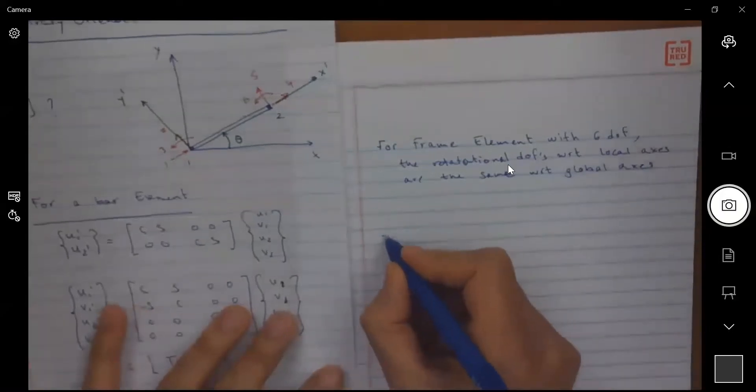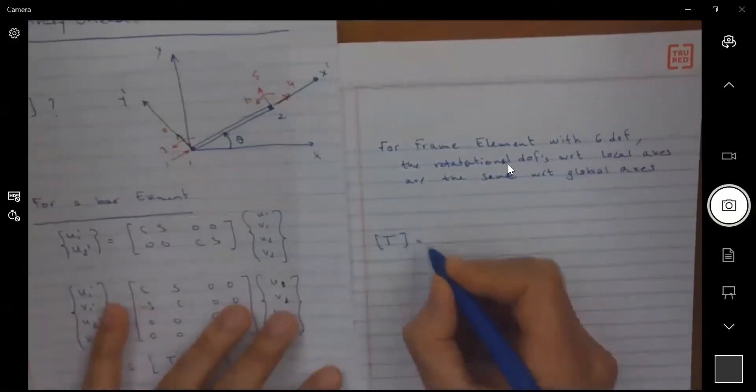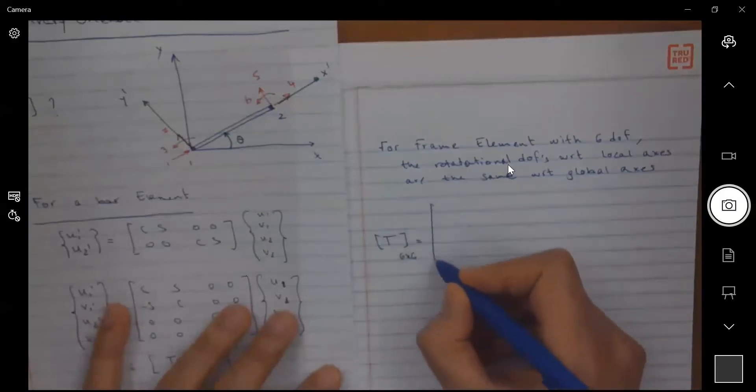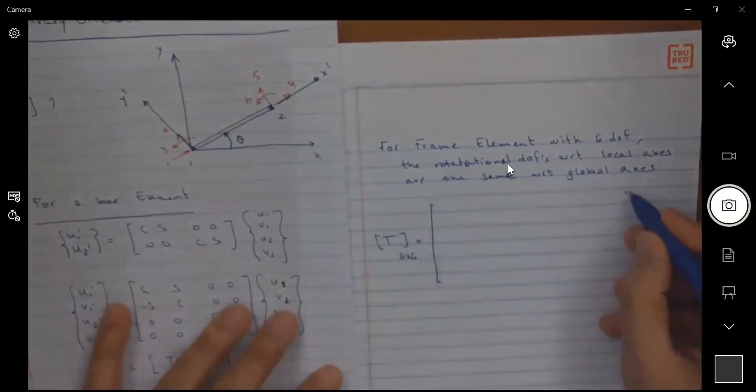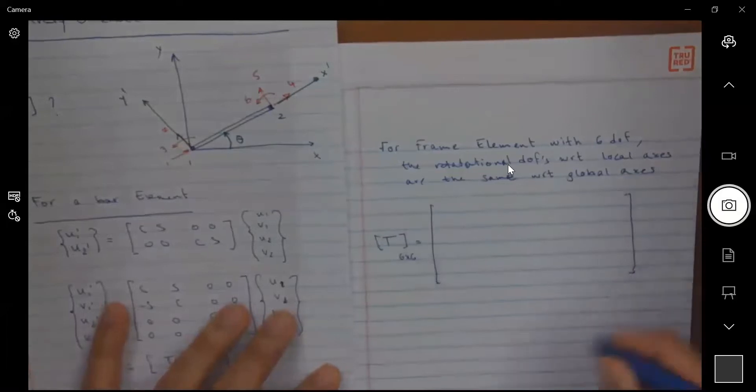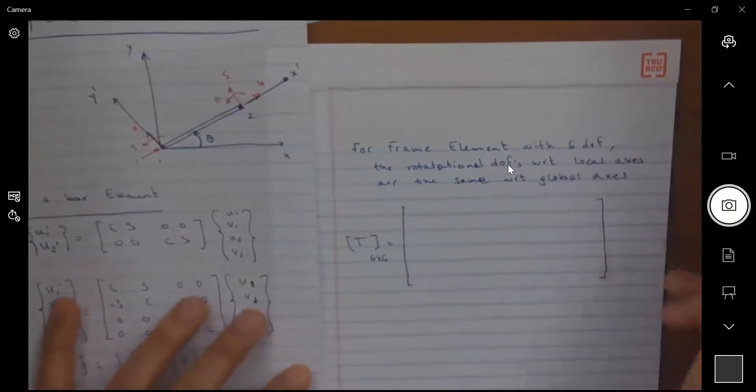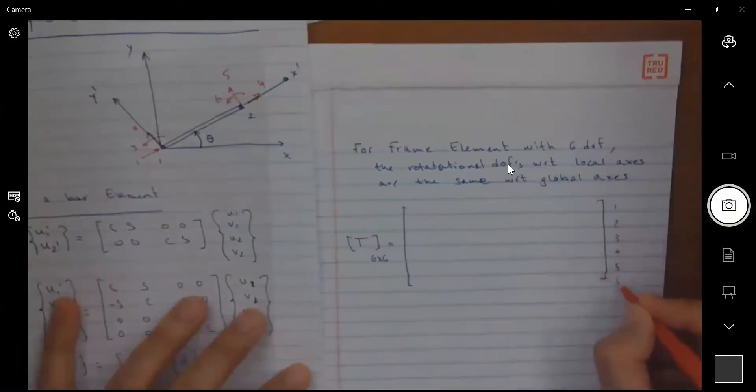So we can write T as equal to, of course this T is going to be a six by six, and it's going to correspond to degrees of freedom one, two, three, four, five, and six.